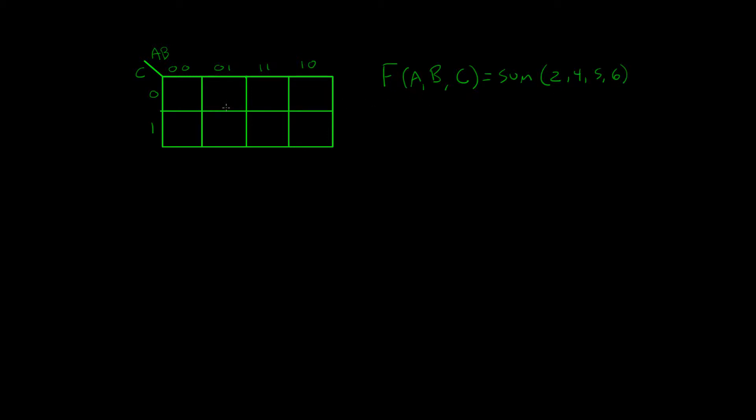OK, so the first thing that we do is actually fill in our K-map. And we do that by looking at the four values in the summation: 2, 4, 5, and 6.